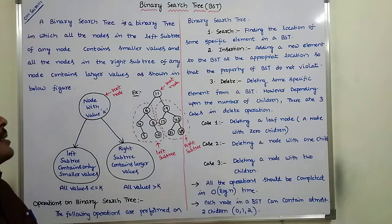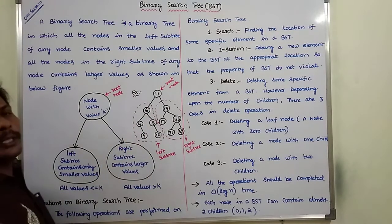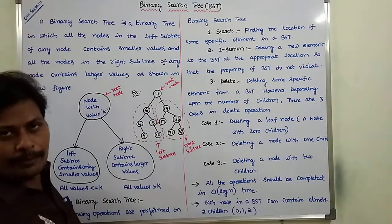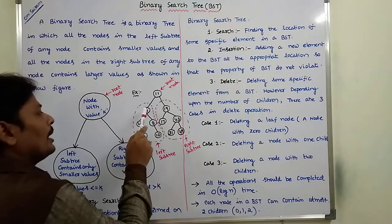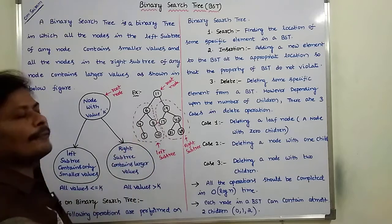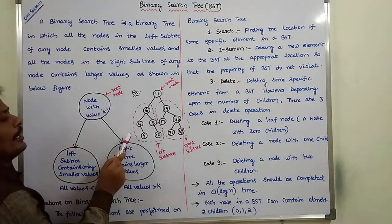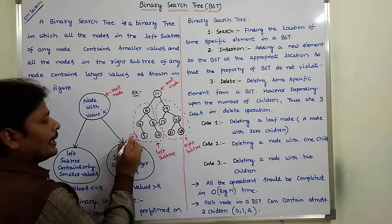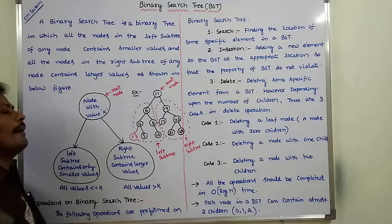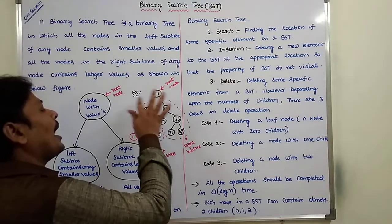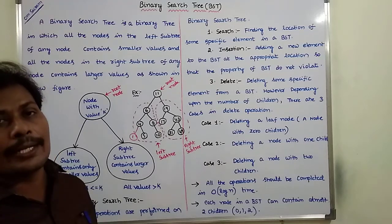In the case of insertion operation, suppose we want to insert element 1. First, we find the location where we want to insert. 1 is compared with 11 — it is lesser, so go to the left subtree. 1 is compared with 6 — it is lesser, go to the left subtree. 1 is compared with 4 — it is lesser, go to the left subtree. The left subtree is empty, so we create a node with value 1 and add it to the left child of node 4, without violating the binary search tree property.